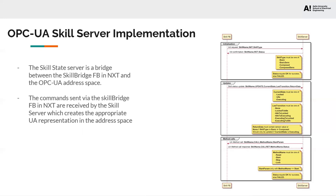When calling one of the UA methods of the skill, the skill server will send a method call command to the skill bridge function block. This command includes the name of the method, and if it is the start method, the start parameter set by the set start parameter method is also sent. After sending this command, the skill server expects to receive a response telling it if the call was successful or not. This response should be sent as fast as possible, since the UA method call will not return before the response is received. If no response is received, the UA method call will fail with a timeout error.